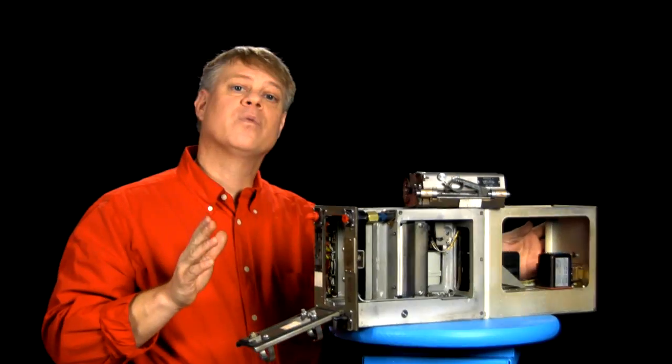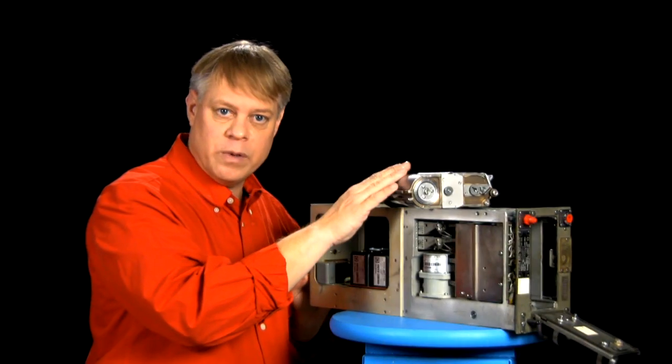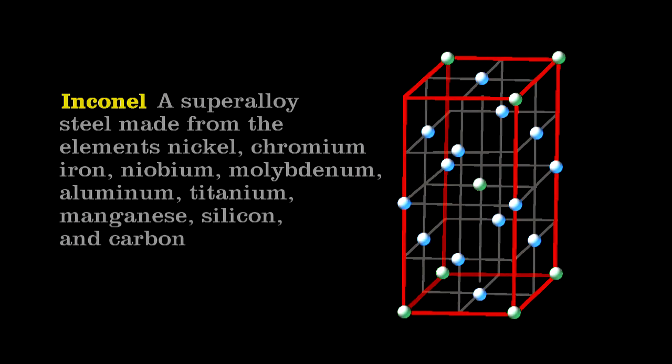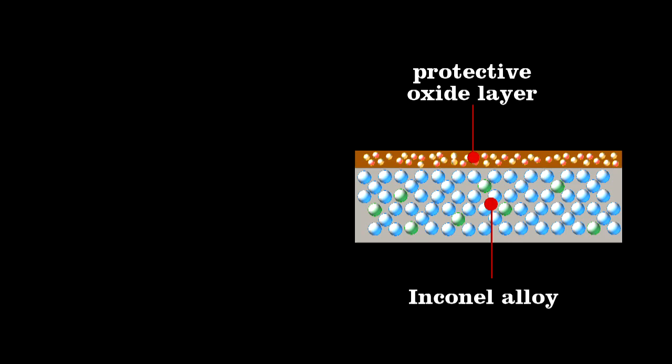The key to making the black box work is the Inconel metal used in the magazine. Typically used in furnaces, it's resistant to corrosion and oxidation, and when it's heated to high enough temperatures, it forms an oxide layer that protects the surface from further attack.